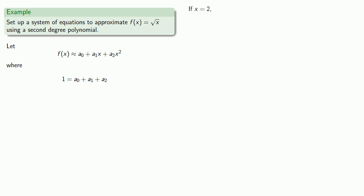So let's try x = 2. If x = 2, then f(2) is square root of 2. And so, substituting 2 into our function and into our polynomial, we get an equation that involves a₀, a₁, and a₂.